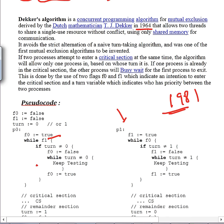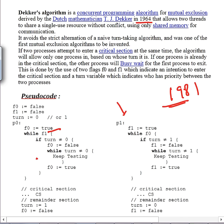The drawback of Dekker's algorithm is that it may cause starvation at times, because it makes its flag false while waiting. What happens is when the other process is done with the critical section, it makes the turn zero, so the waiting process is looping until turn becomes zero. If the other process crashes inside the critical section, the waiting process may run in this loop forever.